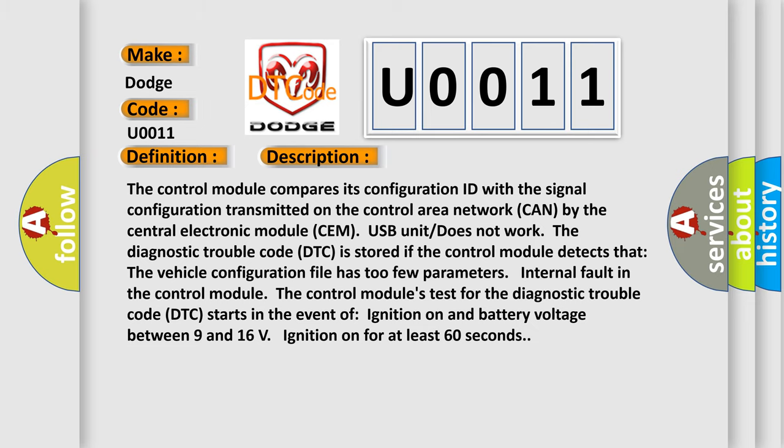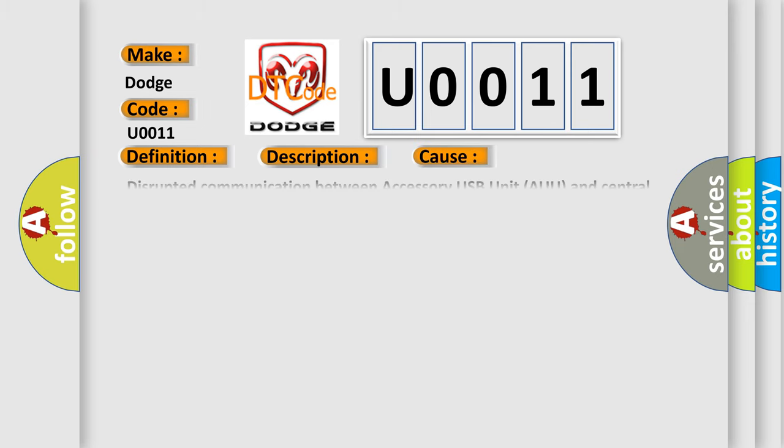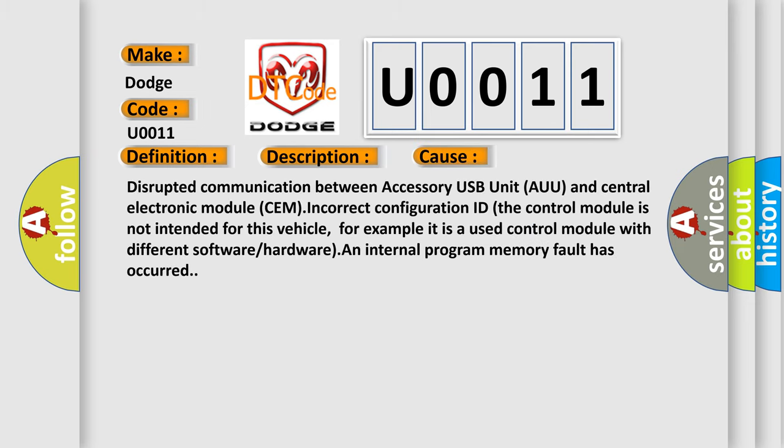This diagnostic error occurs most often in these cases: disrupted communication between the Accessory USB Unit (AUU) and the Central Electronic Module (CEM); incorrect configuration ID; the control module is not intended for this vehicle — for example, it is a used control module with different software or hardware; or an internal program memory fault has occurred.